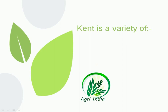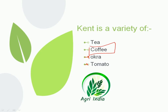Next question: Kent is a variety of — options are tea, coffee, okra, and tomato. Some tomato varieties include Pusa Rabi, Hisar Lalit, and others, but Kent is not among them. Okra varieties include Varsha, Uphar, and Parbhani Kranti, but Kent is not one of them either. The correct option is coffee — Kent is a variety of coffee.